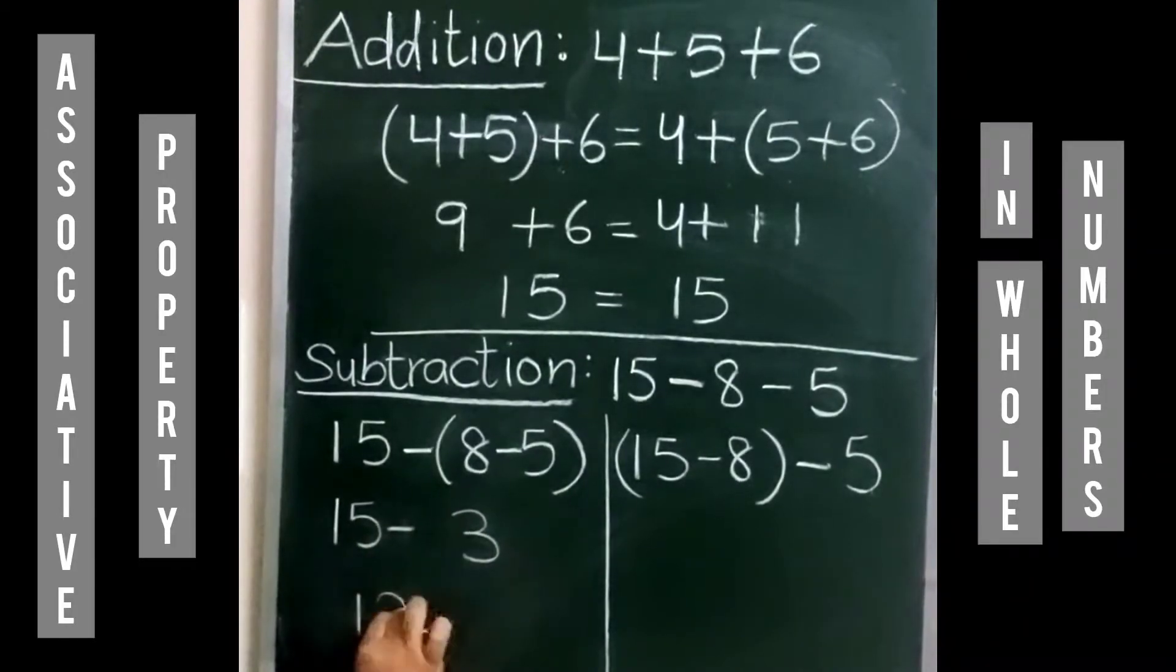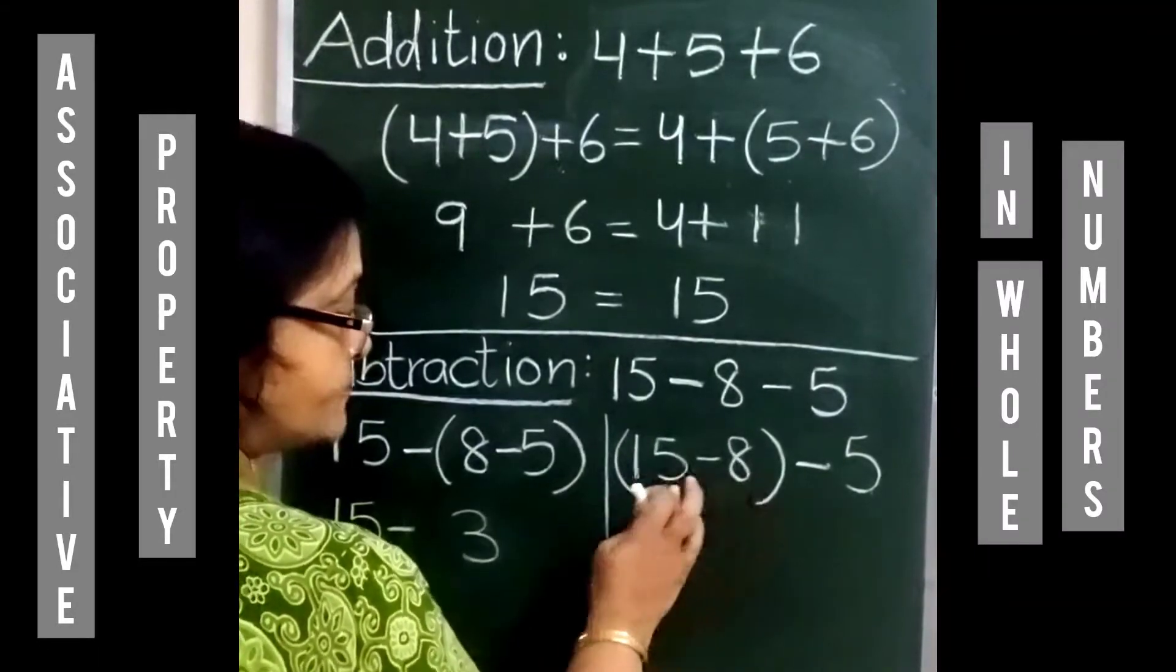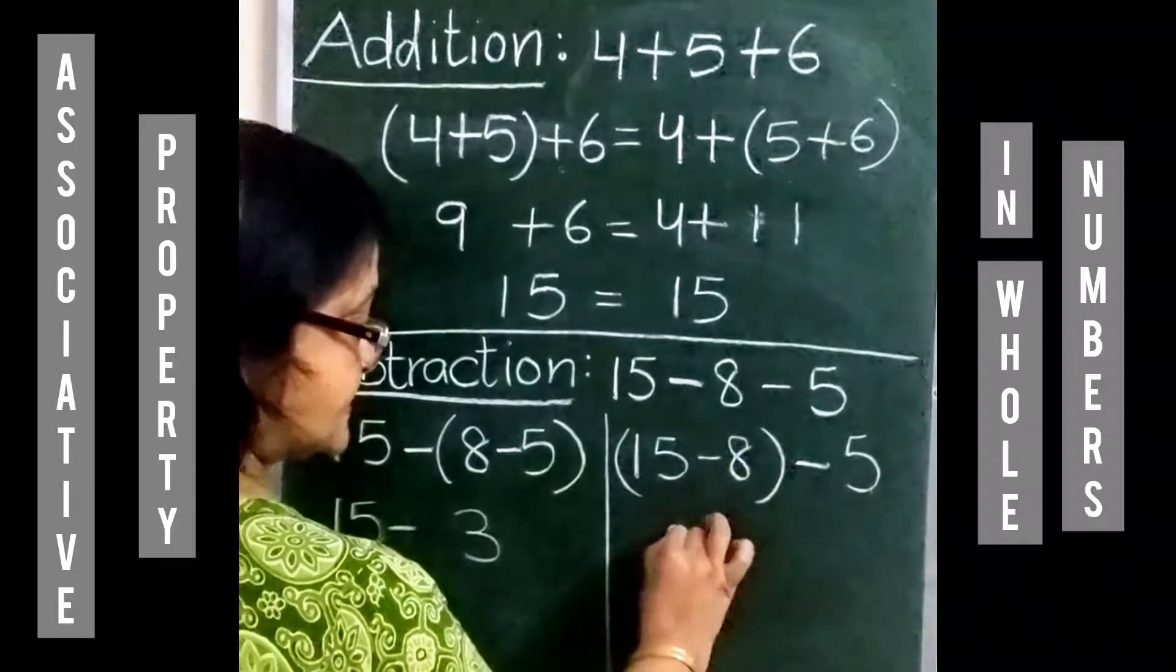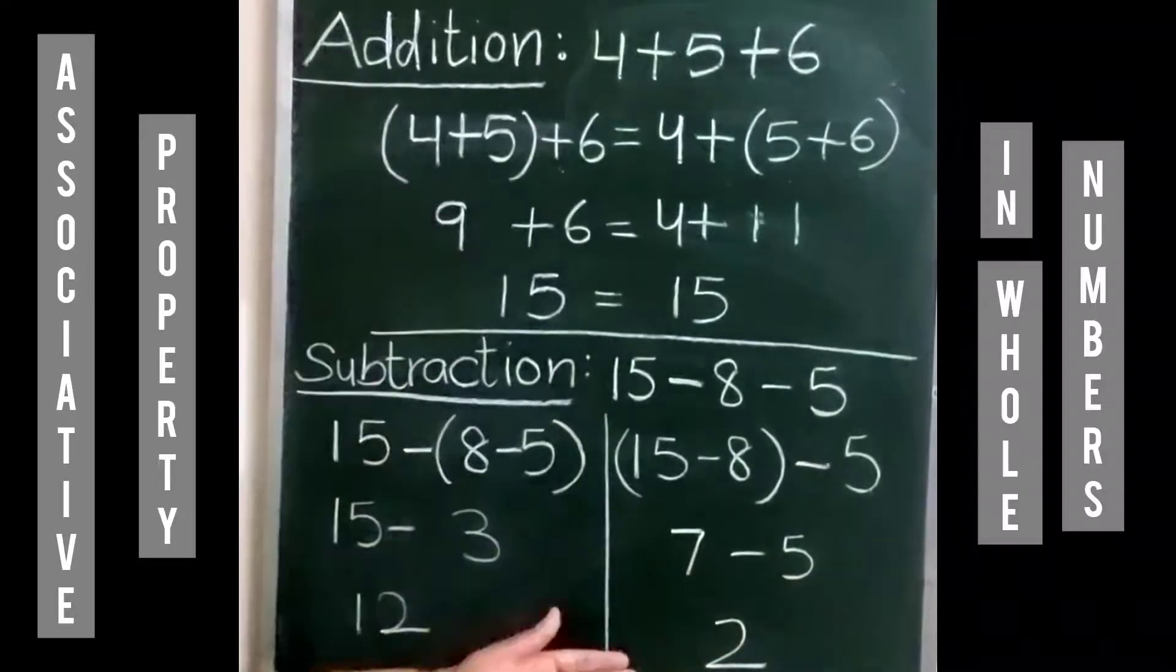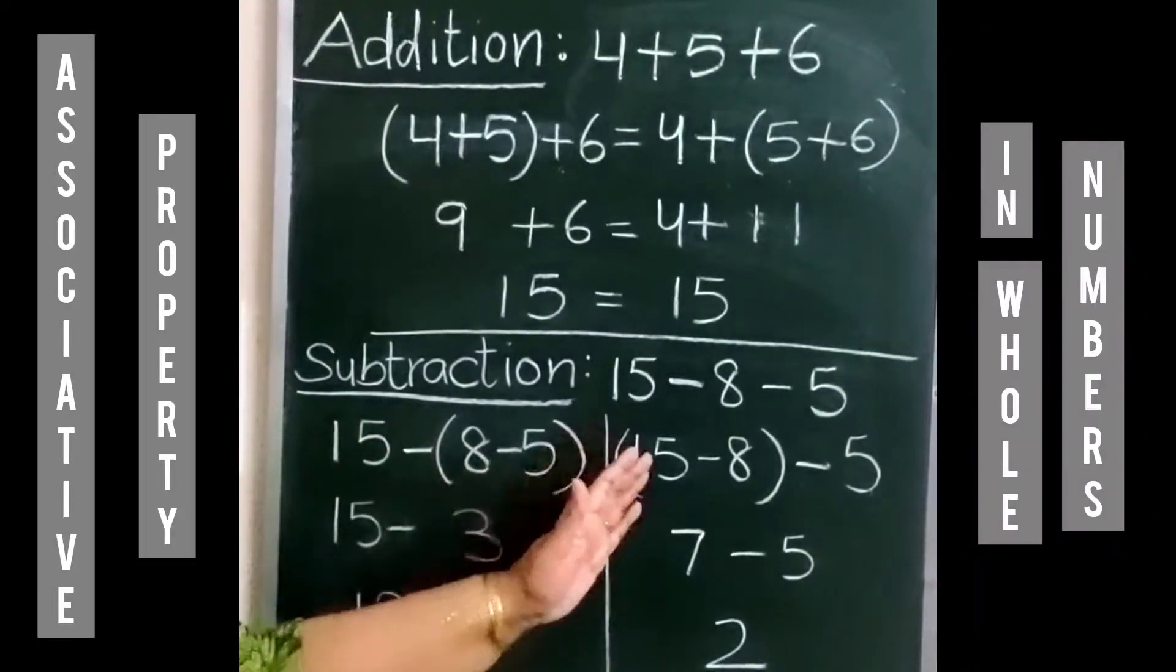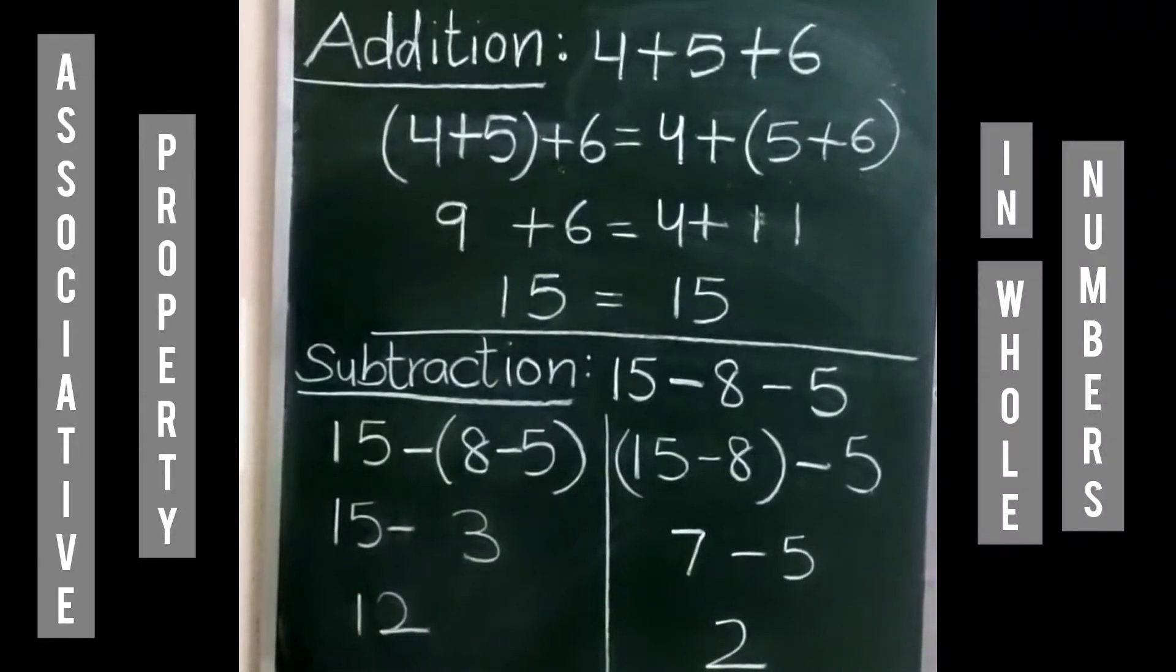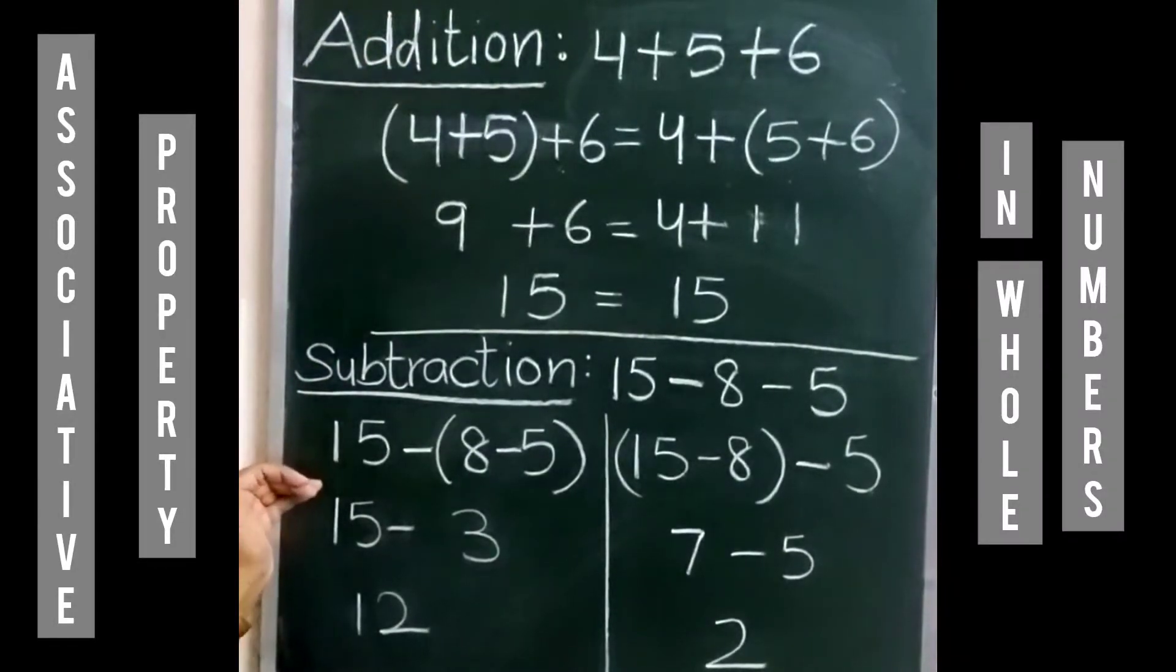Now if we change the group and we subtract 8 from 15, we will get 7, and 7 minus 5 is equal to 2. So we can see the result is not the same. So that means if we change the group of numbers in subtraction, then the result is also different. The associative property in whole numbers is true for addition, but it is not true for subtraction.